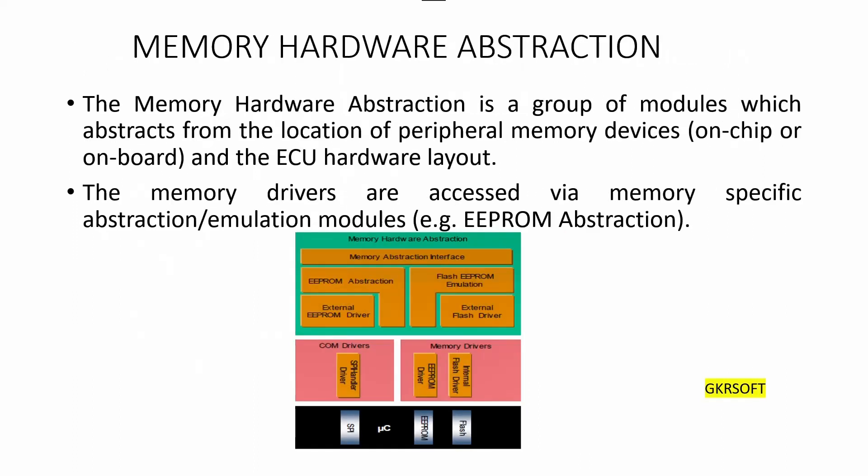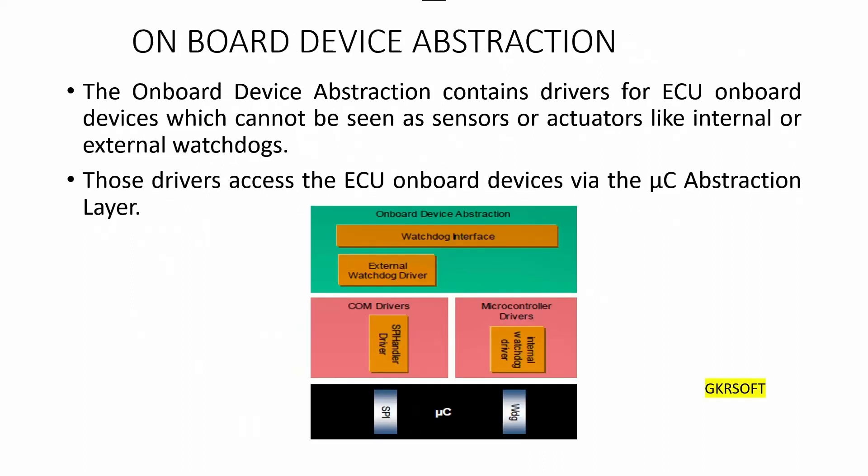Memory hardware abstraction is a group of modules which abstracts from the location of peripheral memory devices — on-chip or on-board — and the ECU hardware layout. For example, on-chip EEPROM and external EEPROM devices are accessible via the same mechanism. The memory drivers are accessed via memory-specific abstraction modules, for example EEPROM abstraction. By emulating an EEPROM abstraction on top of flash hardware units, a common access via memory abstraction interface to both types of hardware is enabled. The task of memory hardware abstraction layer is to provide an equal mechanism to access internal (on-chip) and external (on-board) memory devices and different types of memory hardware such as EEPROM and flash. This memory hardware abstraction is microcontroller independent and external device dependent.